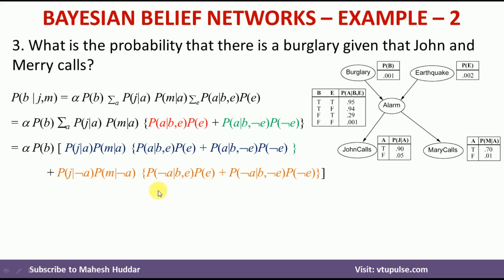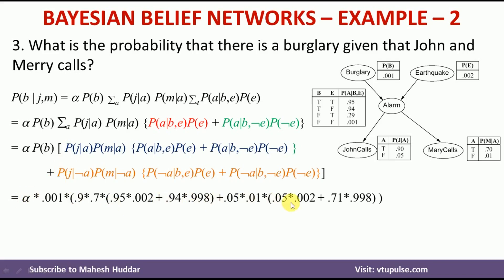Once we get this, we go back to the problem definition and put in all the values. We get the probability of B given J and M — that is, probability of burglary given John has called and Mary has called — and I am getting the answer as alpha times 0.00059.